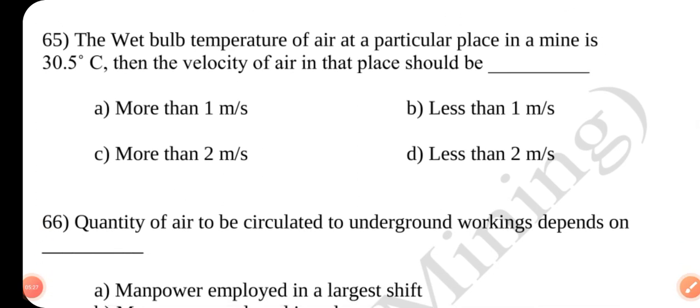Question 65. The wet bulb temperature of air at a particular place in your mine is 30.5 degrees Celsius. Then the velocity of air in that place should be dash. Answer A. More than 1 meter per second.